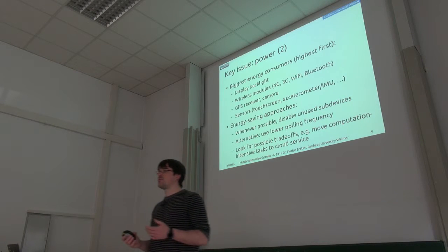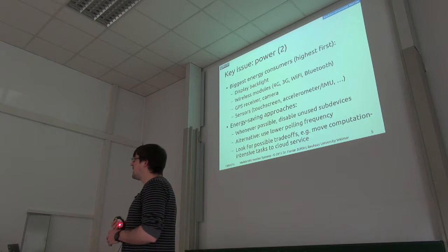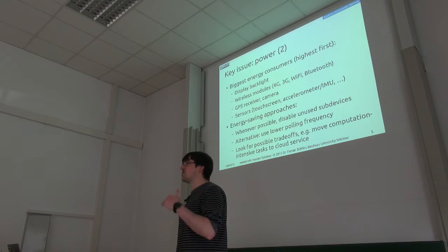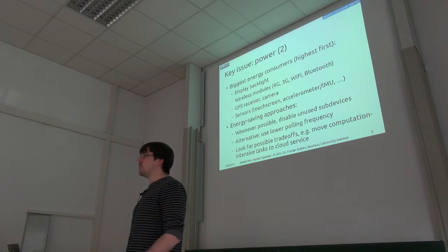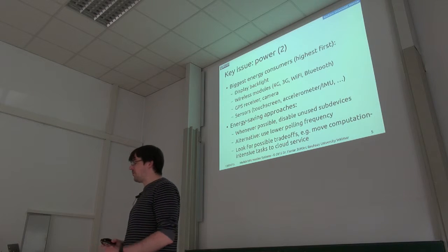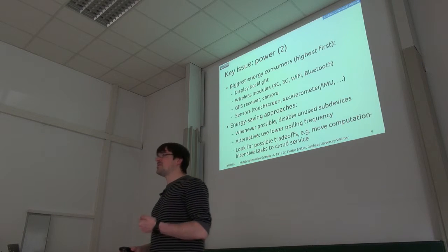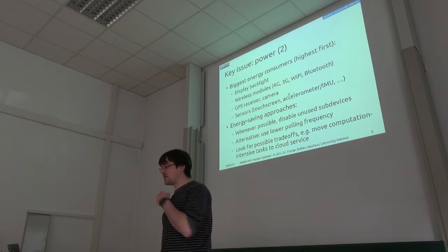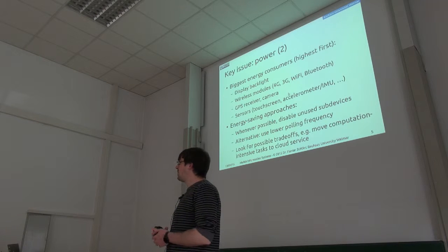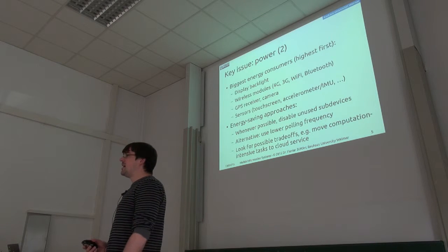One of the important strategies to conserve energy in mobile devices is to turn off the big energy consumers whenever possible. The biggest one is actually the backlight of the display — or more generally, the display itself. If you have any way of running your app without needing the display, you should turn it off; that saves by far the most energy. The next biggest consumers are usually the wireless modules like Wi-Fi, 4G, 3G, and 2G in descending order of energy consumption, plus the GPS receiver, camera, and other sensors.